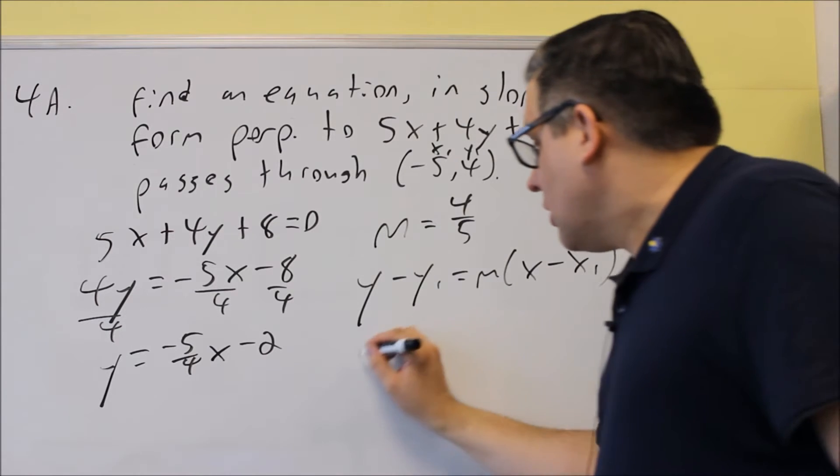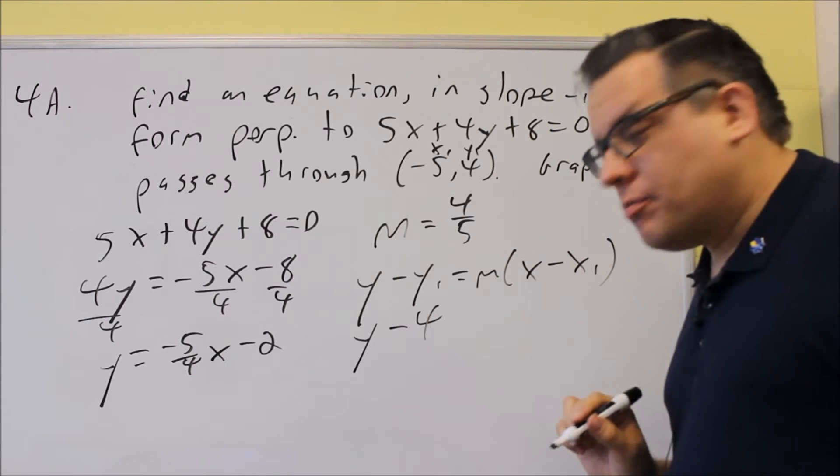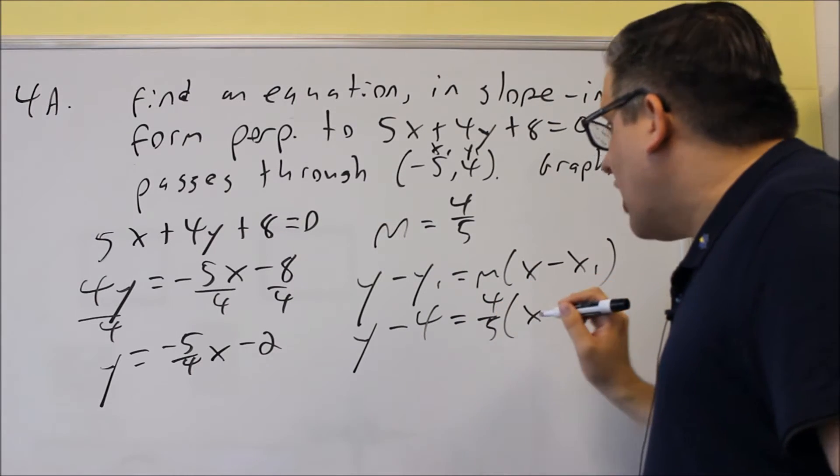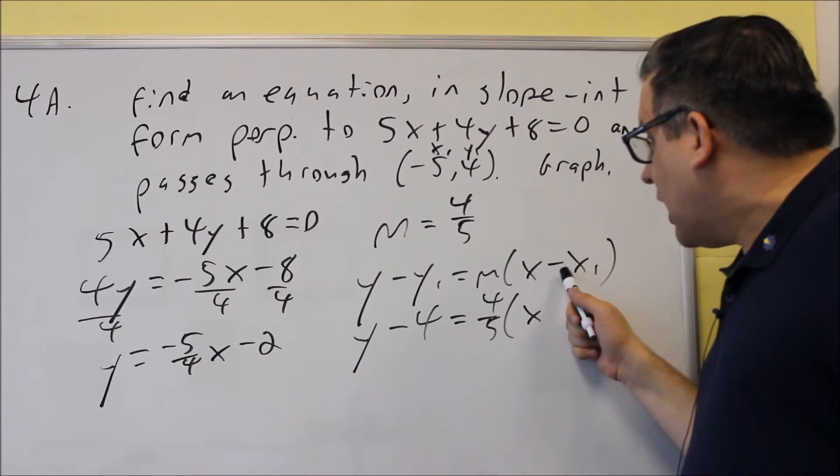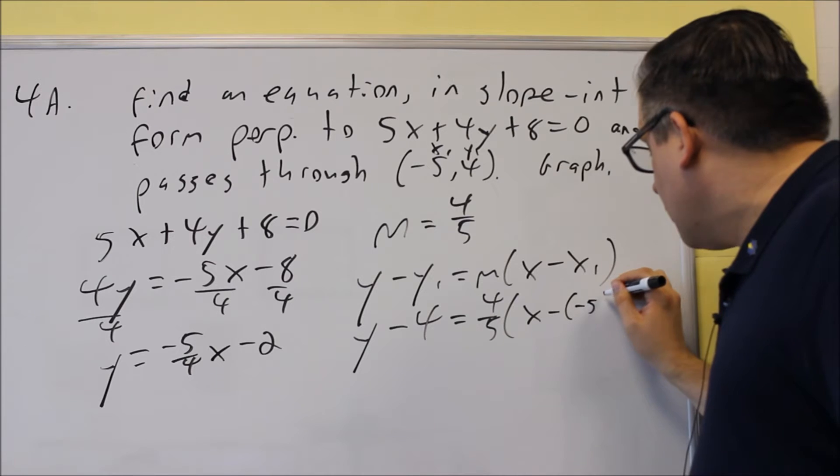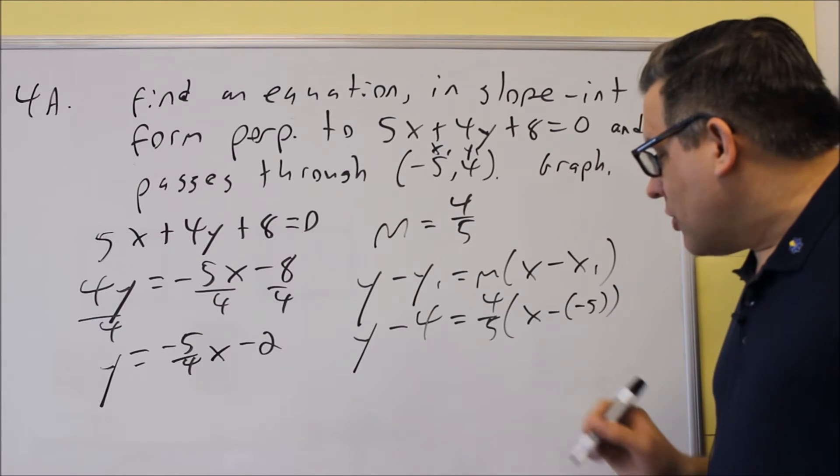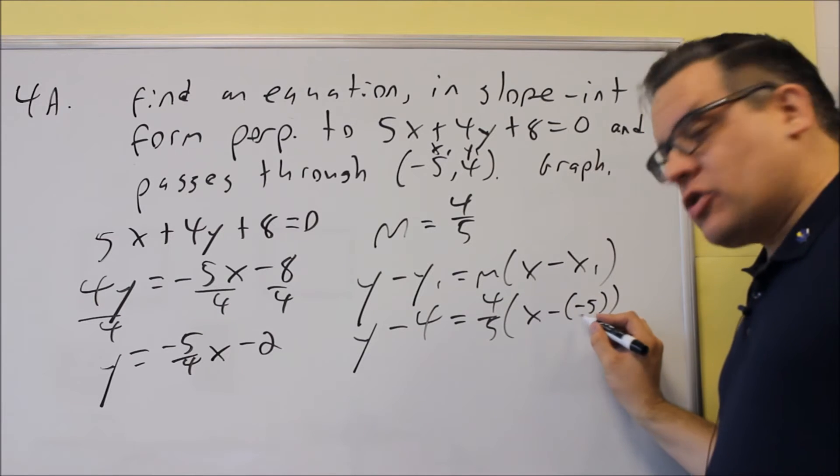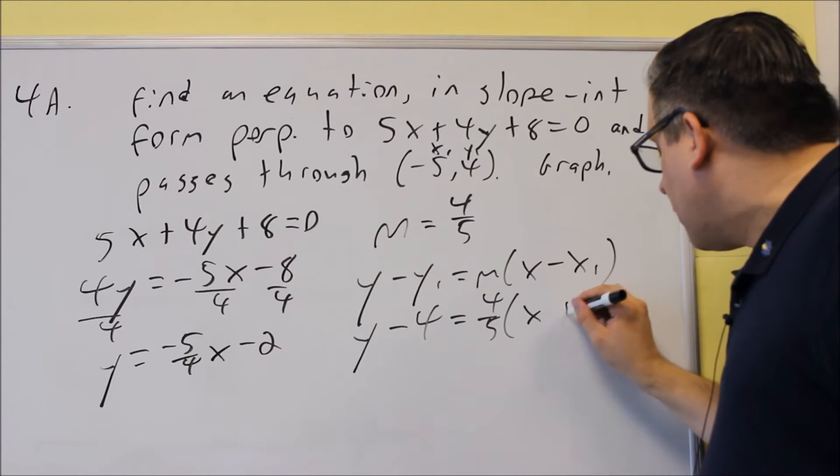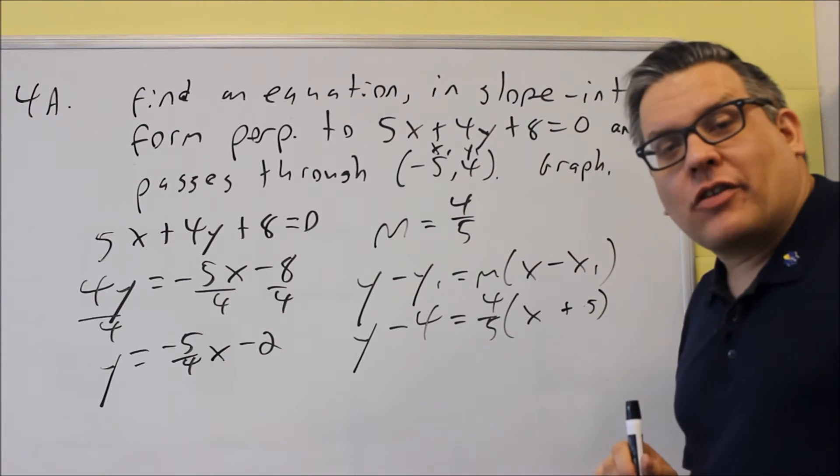And then we'll solve for y. That's going to give us our answer in slope-intercept form. So we're going to do y minus 4, that's the y1, equals m, which is 4 fifths, and we have x minus x1. Now we have a minus, a negative here, so you've got to be careful when you put that in. It's actually going to end up being a plus. So it's written like this, but I'm just going to go ahead and change it into a plus because that's what will happen when you have the double negatives.